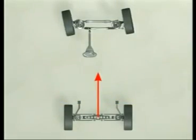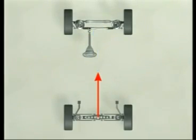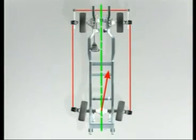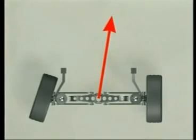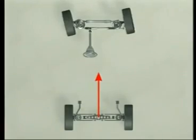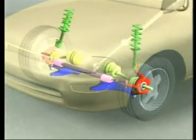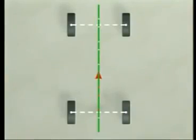Thrust alignment is where the front wheels are aligned to the rear axle. The drive direction of the rear axle is referred to as the thrust angle. The thrust angle and geometric center should be the same. Four-wheel alignment is when all four wheels are independently aligned to the geometric center line. Two-wheel alignments align only the front wheels to the vehicle center line and assume the rear wheels are aligned with the geometric center line.